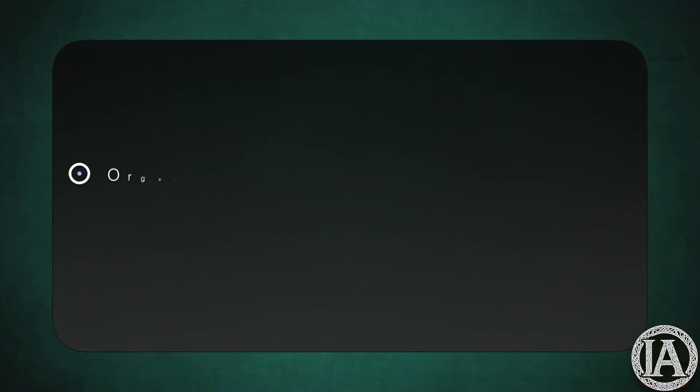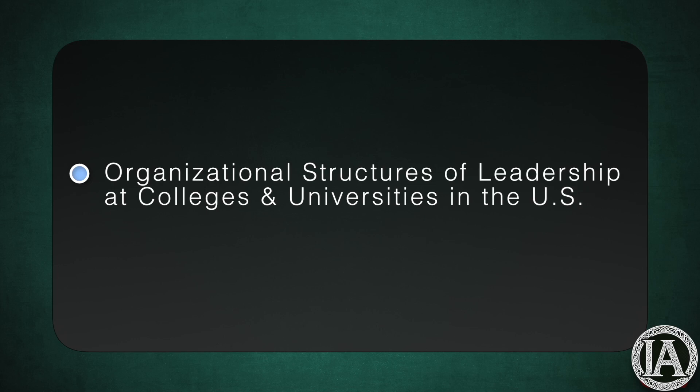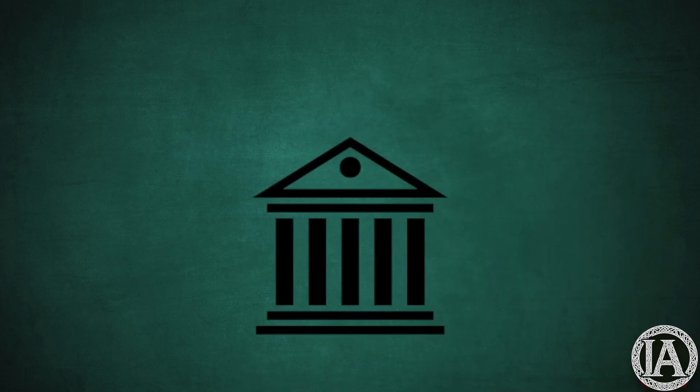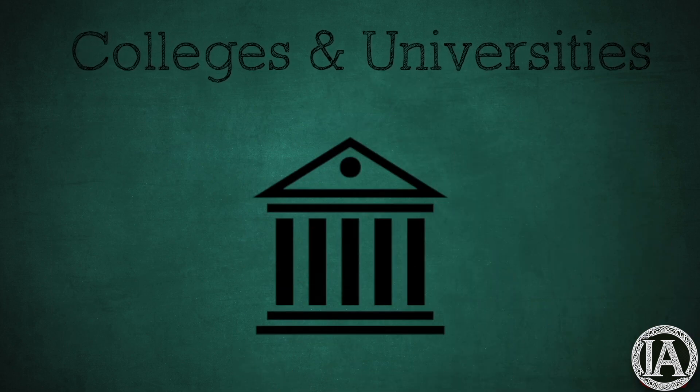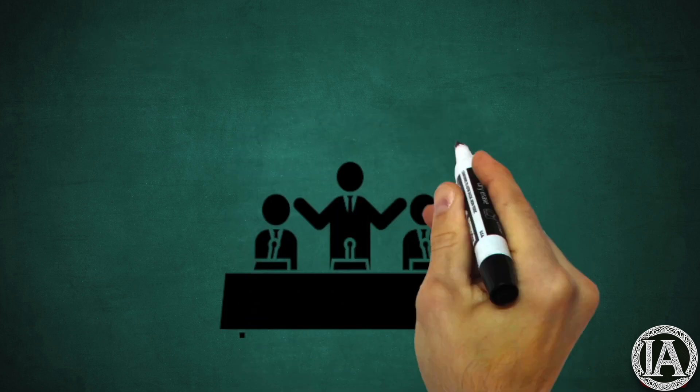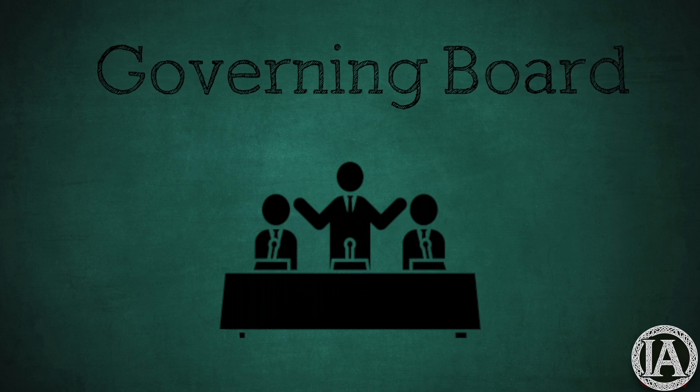In this video, we will examine the organizational structures of leadership at colleges and universities in the United States. Many administrative similarities are shared by institutions of higher education in the United States. In every instance, the highest level of administration is the governing or policymaking body.